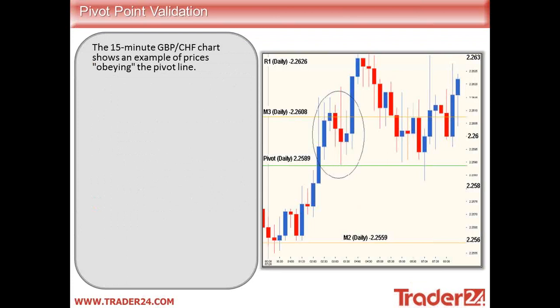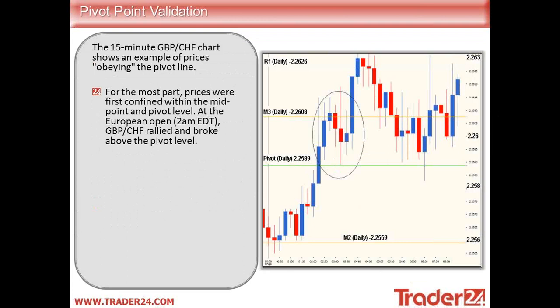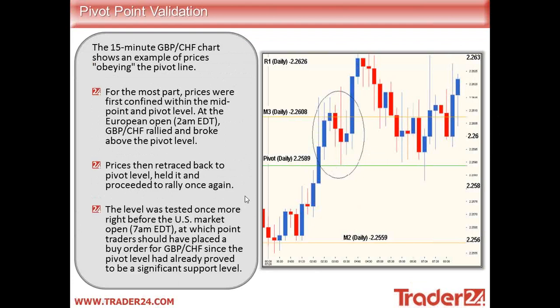Here's an example on a 15-minute pound/Swiss franc chart showing prices obeying the pivot line. We can see the price bouncing off that daily pivot point. For the most part, prices were first confined within the midpoint and pivot level. After the European opening it rallied and broke above the pivot to the upside. Prices then retraced back to the pivot level, held it, and proceeded to rally once again — it broke through the pivot level, retraced back down to the pivot level, and then continued in an upward trend. The level was tested once more right before the US market opened, at which point traders should have placed a buy order since the pivot level had already been proved to be a significant support level. It gets tested once again and then we continue on to the upside.